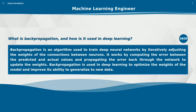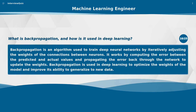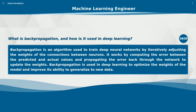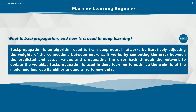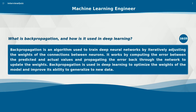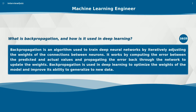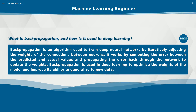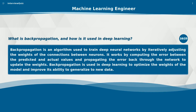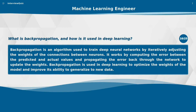What is backpropagation, and how is it used in deep learning? Backpropagation is an algorithm used to train deep neural networks by iteratively adjusting the weights of the connections between neurons. It works by computing the error between the predicted and actual values and propagating the error back through the network to update the weights. Backpropagation is used in deep learning to optimize the weights of the model and improve its ability to generalize to new data.